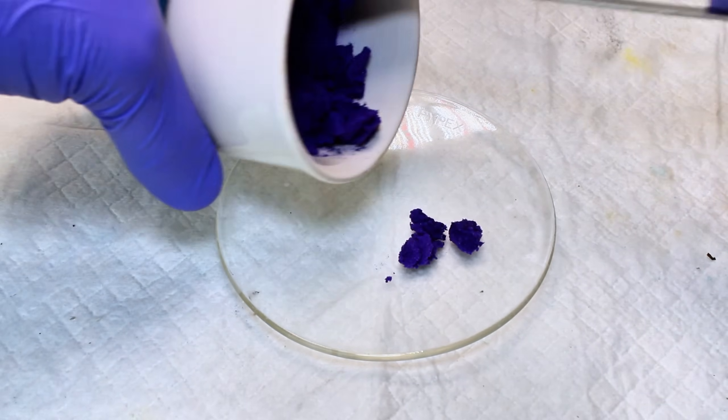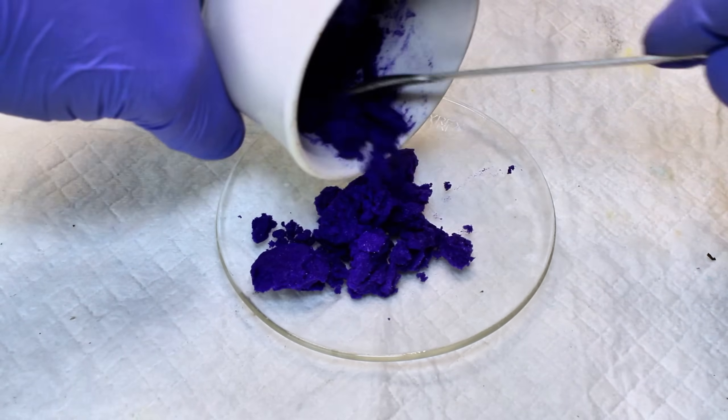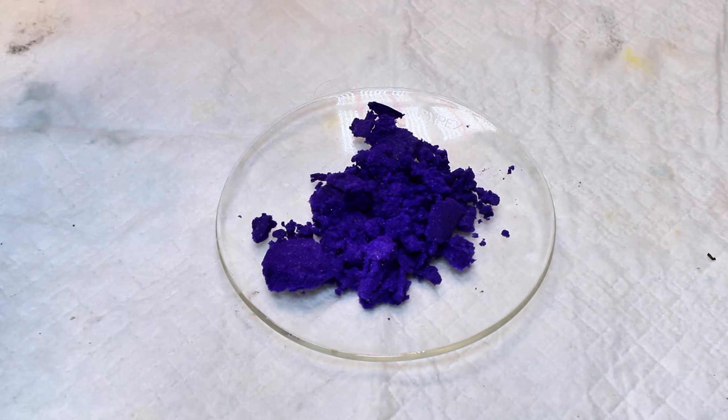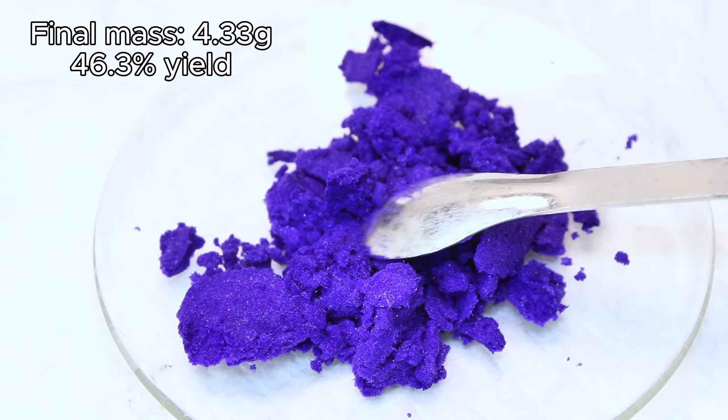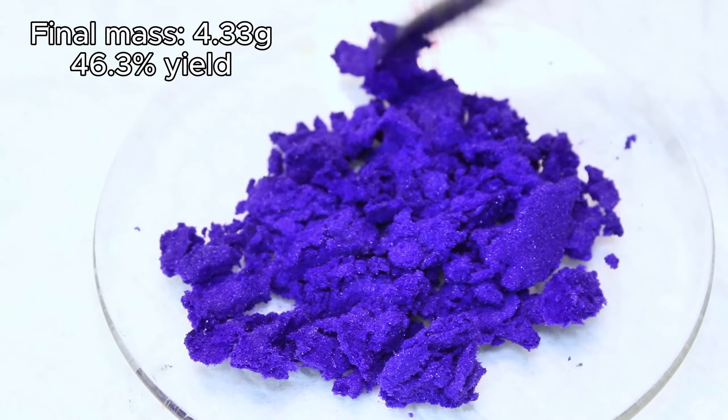In any case, after pulling a vacuum for about a minute to remove as much moisture as I could, I then transferred the purple crystals to a vacuum desiccator and dried it under a full vacuum for about an hour. This was then weighed for a final mass of 4.33 grams, which represents a 46.3% yield.